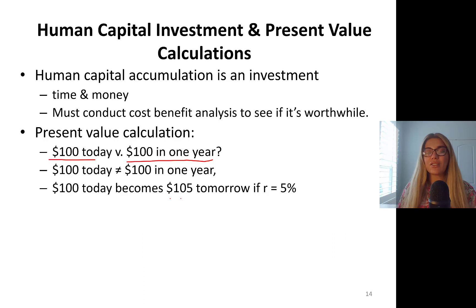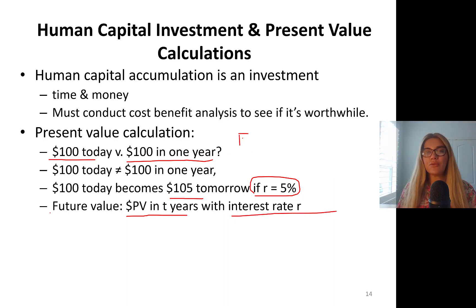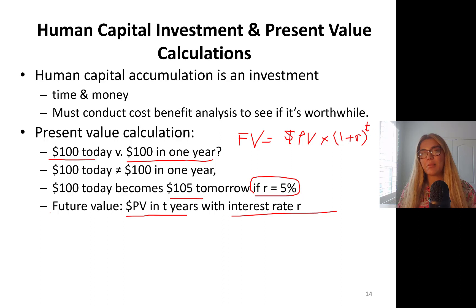$100 today is not equal to $100 in one year — $100 today becomes $105 next year if the real interest rate is 5%. So we have to do future value and present value calculations. Future value is present value dollars in t years with interest rate r. So future value equals PV times (1 + r), and if it's t periods ahead, you raise (1 + r) to the power t.